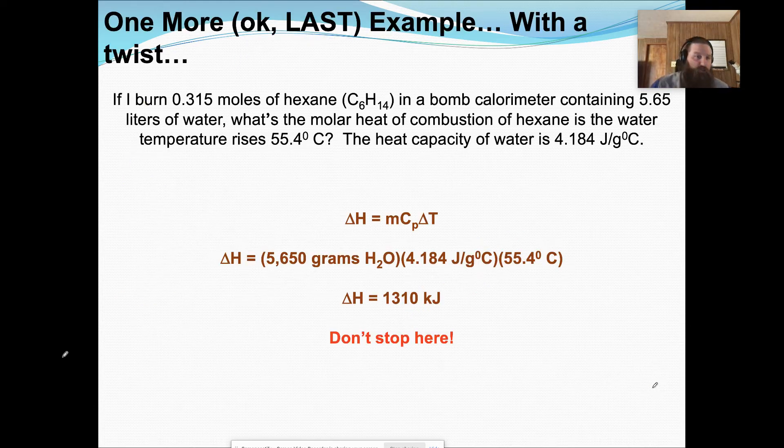Alright, let's look at one more example. This will be the last one. If you burn 0.315 moles of hexane in a bomb calorimeter with 5.65 liters of water, find the molar heat of combustion of hexane. The water temperature is going to rise by 55.4 degrees Celsius.